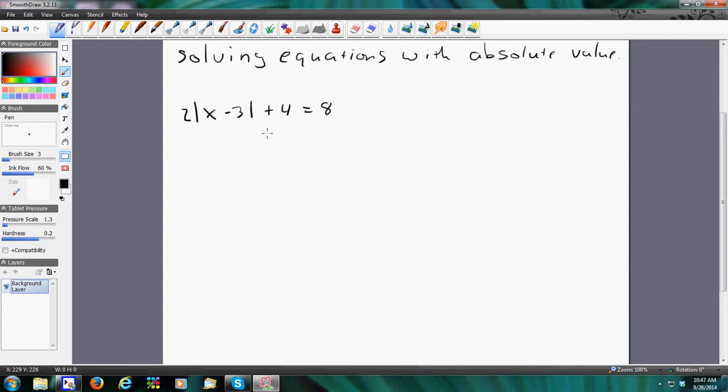Absolute value questions are probably the easiest questions you're going to end up having. There's just a couple things you have to remember. The first thing is, you always want the absolute value by itself. And that varies very similar to radicals in that format.